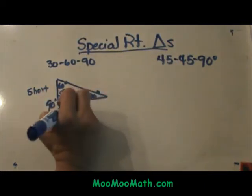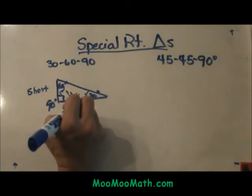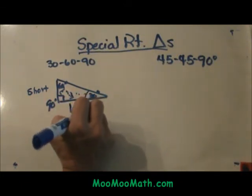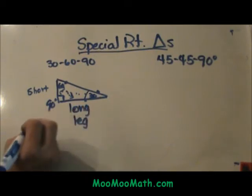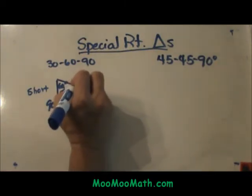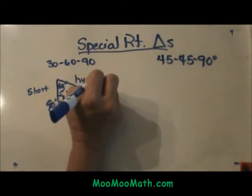The longer leg is opposite the 60 degree angle, so this is the long leg, and then the right angle is always opposite the hypotenuse.